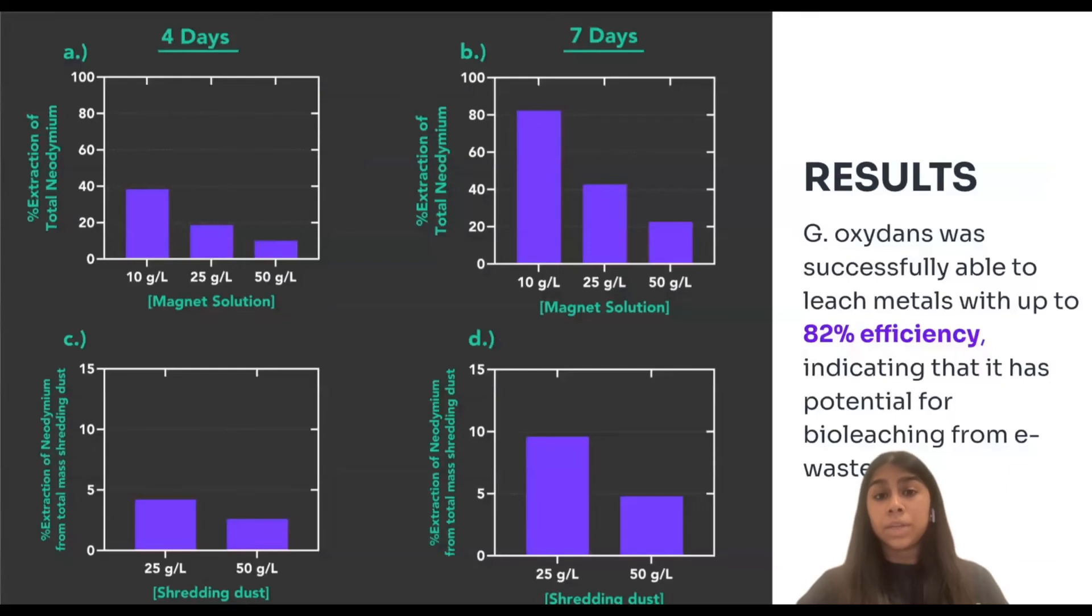Neodymium magnets were used as a feedstock. They are an accurate representation of most rare earth rich e-waste. In addition, shredded e-waste collected from a local recycling facility was used to further support a proof of concept. Experiments were set up with e-waste incubated in cultures, and samples were taken after four and seven days to measure pH, growth, and neodymium content.